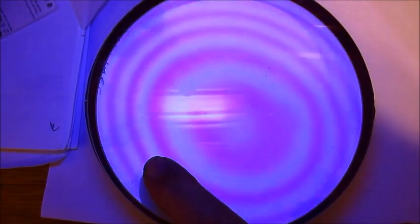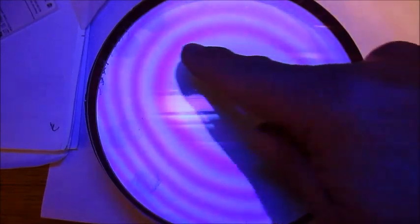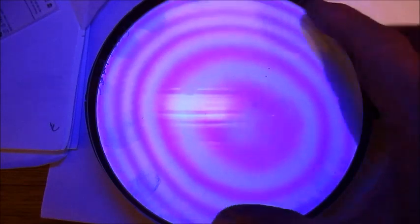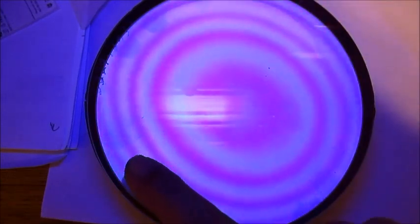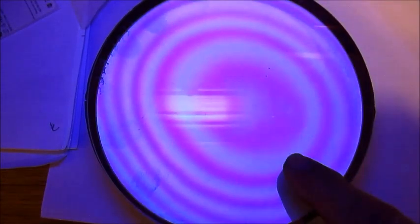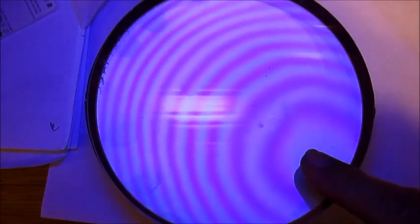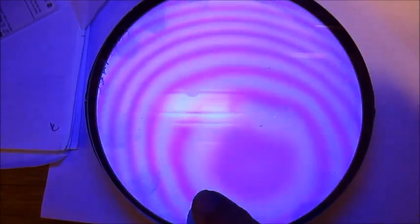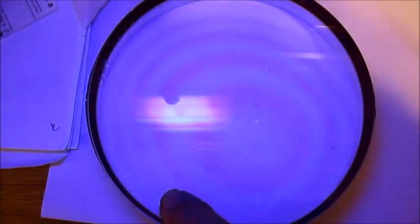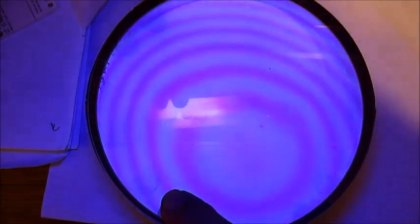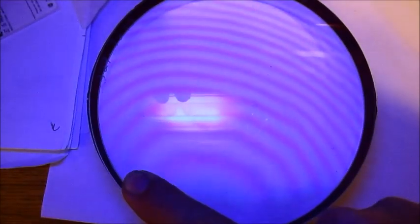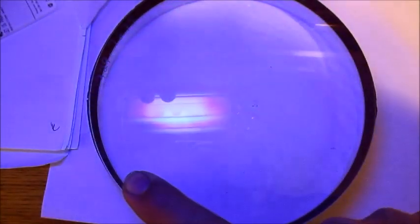Also notice that the fringes are oval-shaped. That means there's a little bit of astigmatism there. Your fringes should always be perfect circles, no matter where you go. Also notice there's a little dimple in the center. It's kind of hard to see here because of the reflection.